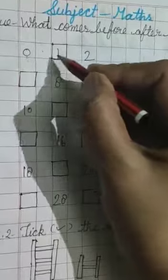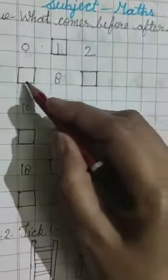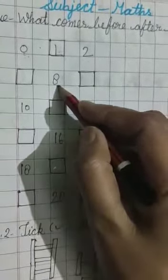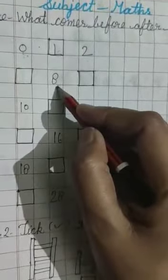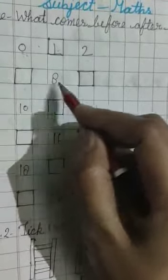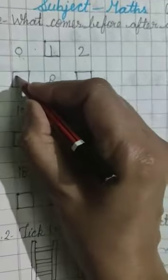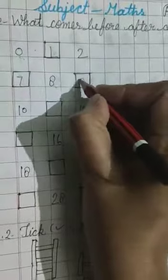1 is between 0 and 2. And blank, 8 blank. What comes before 8 and after 8? 8 is what comes before 8? 7, 8, 9.